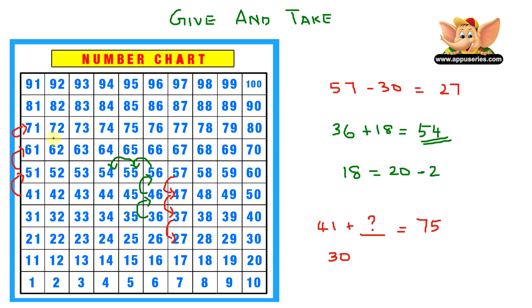And let's count from 71 to 75. That's 1, 2, 3, 4. We have 30 before, and now we have 4 ones. So that makes 34. So we know that 41 plus 34 equals 75.